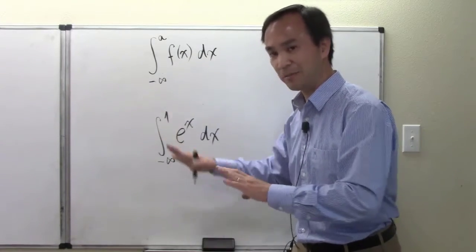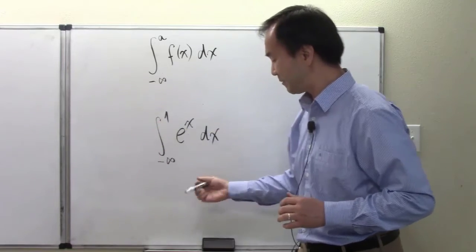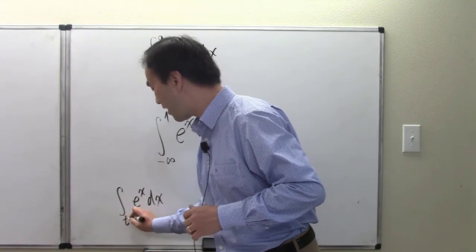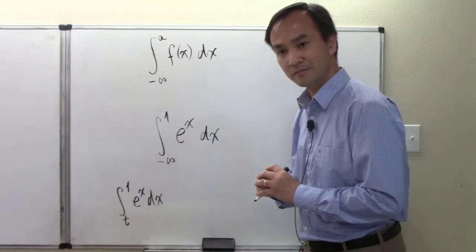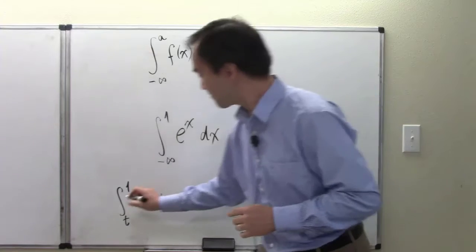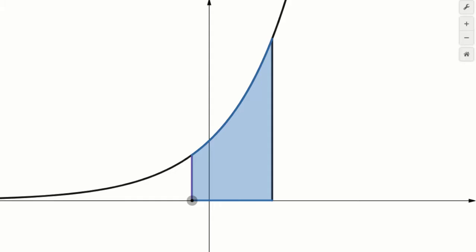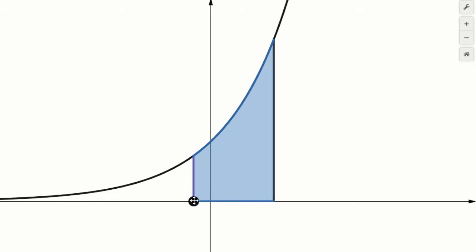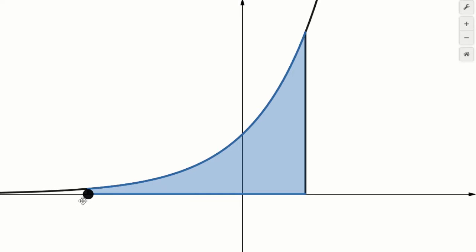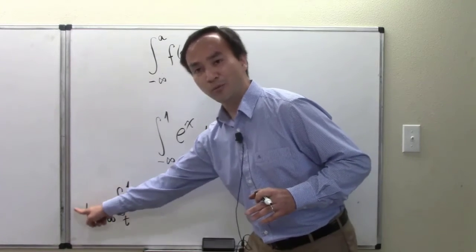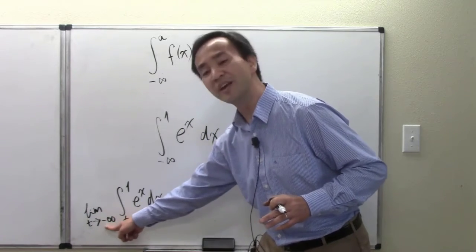The plan: depart from the final answer and think about a definite integral from a finite arbitrary t to one on e to the x. Then take the limit as t goes to negative infinity — equivalent to dragging that handle further to the left-hand side.